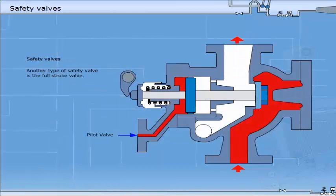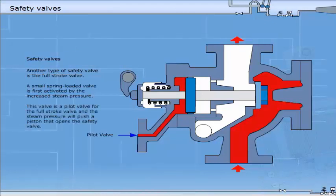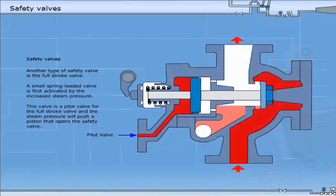Another type of safety valve is the full stroke valve. A small spring loaded valve is first activated by the increased steam pressure. This valve is a pilot valve with a full stroke valve, and the steam pressure will push a piston that opens the safety valve.